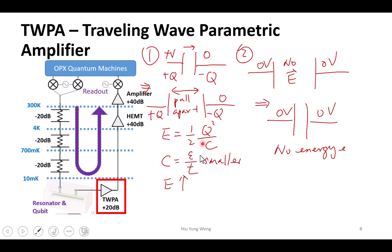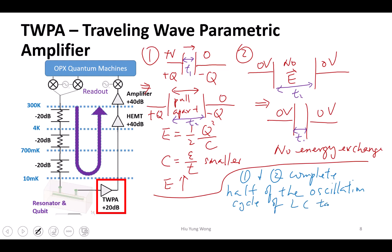The capacitance is epsilon, the electric constant, over T, the thickness. I mean, the distance, right? This is the T. Maybe this is T1. This is T2. So no energy exchange in this case. So this one, then what? One and two complete half of the oscillation cycle of the LC tank.